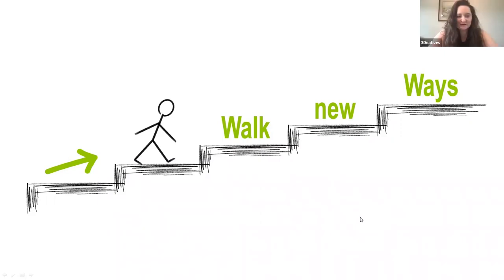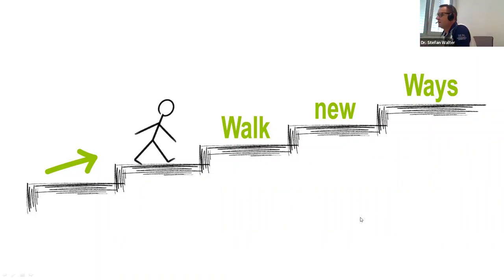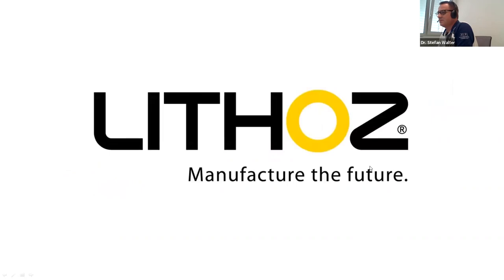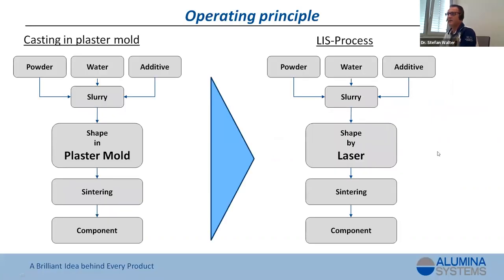The next question: what exactly happens when the laser hits the suspension — could you please explain it in detail? The LIS process is comparable to casting in a plaster mold. You have the powder, water, and additive mixed together into a slurry, brought into shape in the plaster mold. The plaster draws out the water over time until the wall thickness is sufficient, then you go through drying to get the component. The LIS process is similar in slurry composition, except shaping is done by the laser instead of the plaster mold.